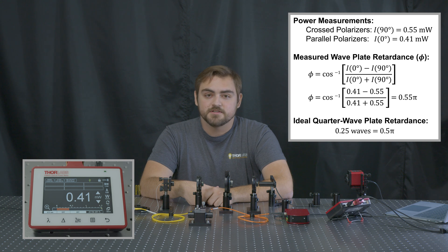With these measurements, we can calculate the retardance for this wave plate for a 633 nanometer input source. In this case, it looks like we're a bit above a quarter wave, but still within the expected range of this wave plate.